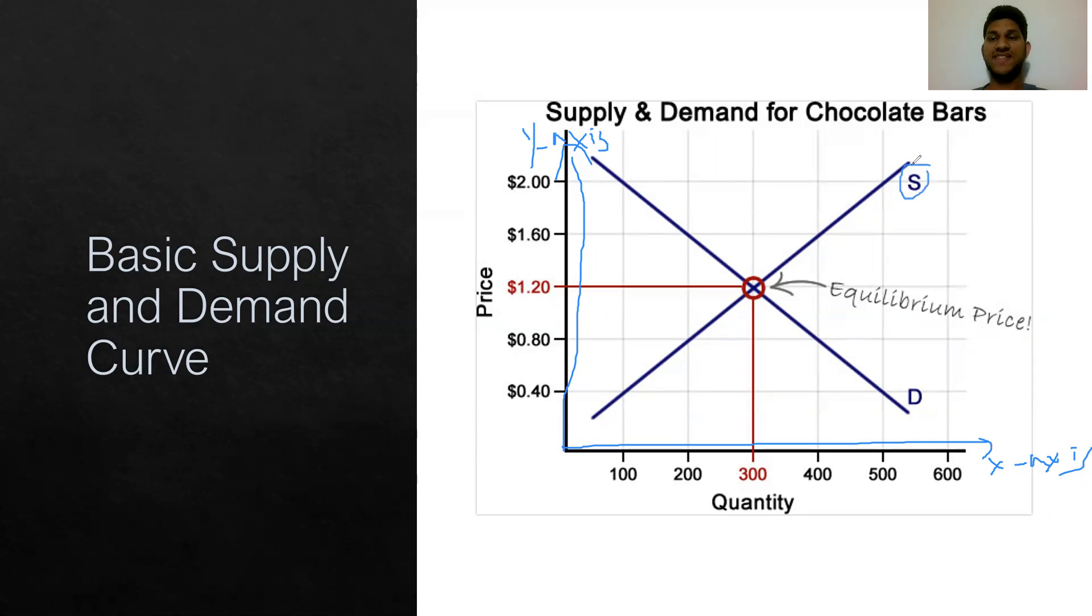We have this thing called the S-line and the D-line. As price goes up, the S-line goes up. As the price goes up, we see that the S-line increases in quantity from 100 to 600. But as the price goes up, the D-line completely different, the opposite things happen. As price goes down, the D-curve increases.